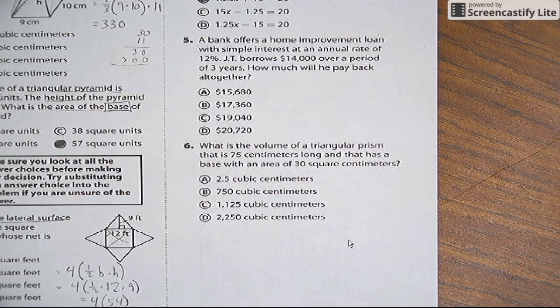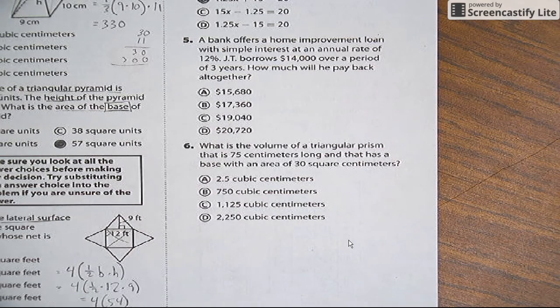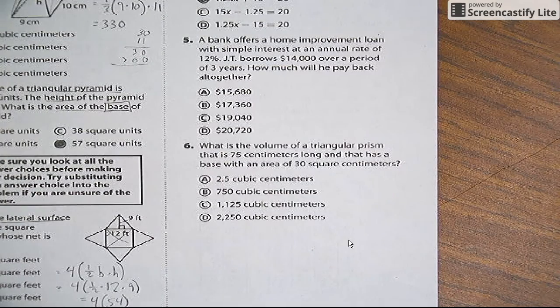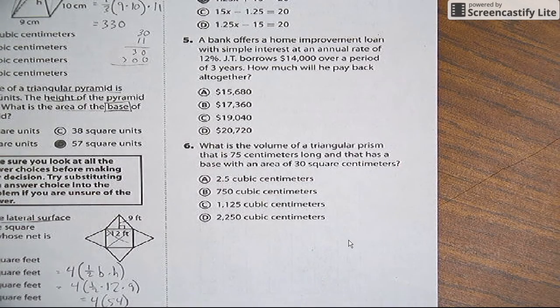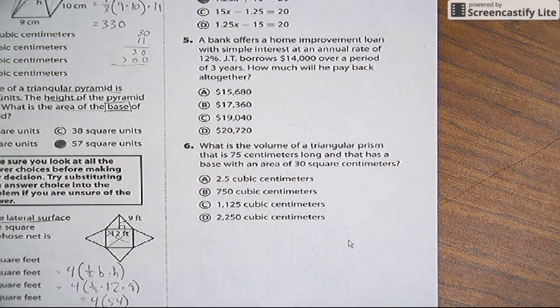All right, questions five and six. So number five asks: a bank offers a home improvement loan with simple interest at an annual rate of 12%. JT borrows $14,000 over a period of three years. How much will he pay back altogether?